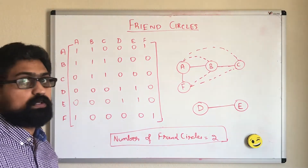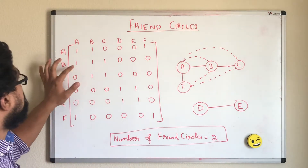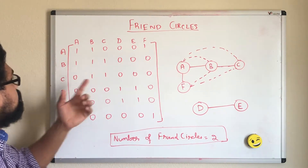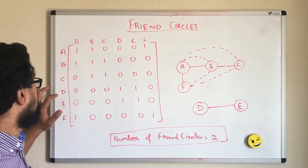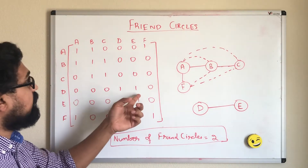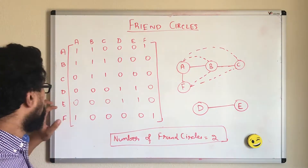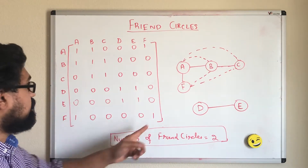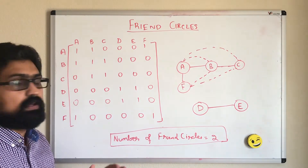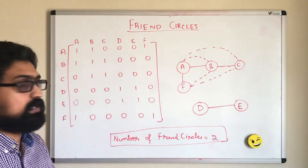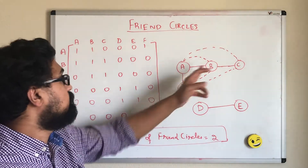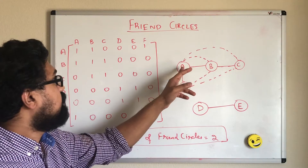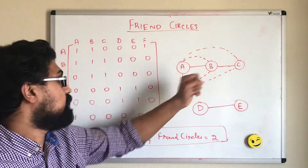Every person is friends with himself. Person B is friends with A, himself and C. Person C is friends with B and himself. Person D is friends with himself and E. Person E is friends with D and himself. Person F is friends with A and himself. Now when we represent this graphically, person A is friends with B and F — this is direct friendship.